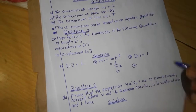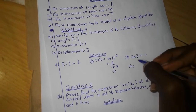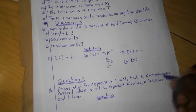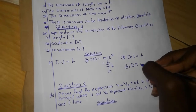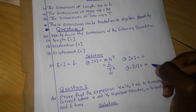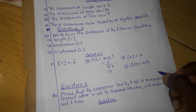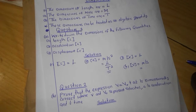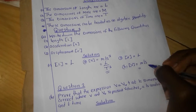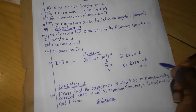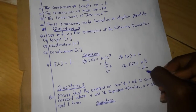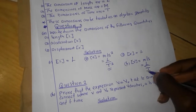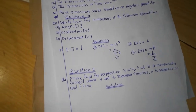Let me also show you the dimensions of velocity. We know that the units for velocity are simply meters per second. Meters represent distance, so M stands for big letter L for length, over time T. Therefore, the dimensions of velocity are L over T.